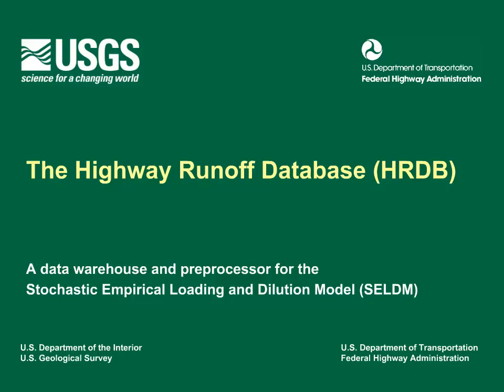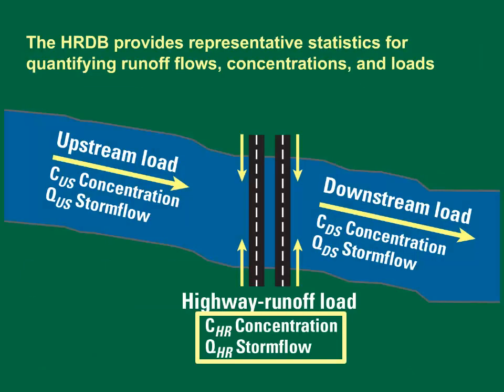This presentation has 15 slides and will take about 10 minutes. The Highway Runoff Database provides representative statistics for quantifying runoff flows, concentrations, and loads. This is a schematic diagram showing the components of the stochastic mass balance analysis used by SELDOM to assess potential effects of runoff on receiving waters. The Highway Runoff Database can be used to calculate runoff coefficient statistics for the highway site from precipitation and flow data. It can also provide highway runoff concentration statistics, concentration data, and paired data.